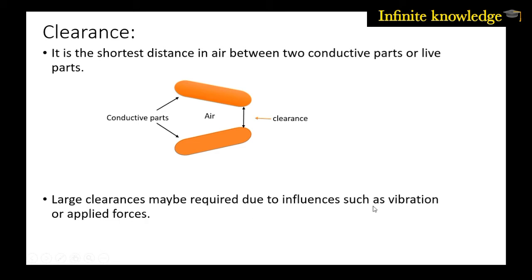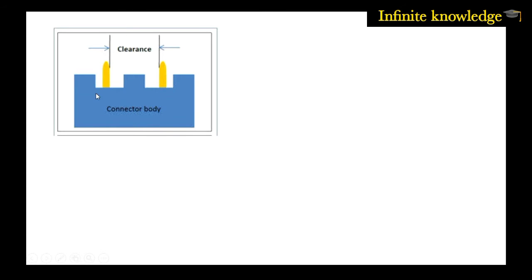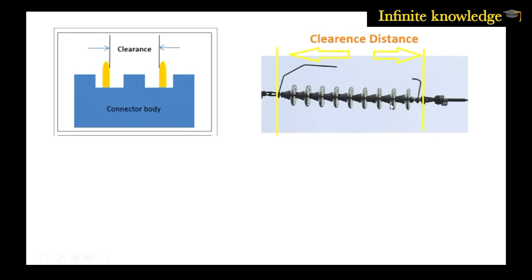A large clearance may be required due to influences such as vibration or applied forces. When the applied forces and vibrations are more, you require more clearance. If this is a conductive body and this yellow line also represents a conductive body, then this distance in air is called clearance — it is the minimum distance through air between these two conductive bodies.